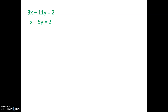So those are two equations, and we want to find the x and y value that will make the first equation true and also make the second equation true. The first step is to get one letter in one equation alone, so I'm going to get the x alone. I'll leave x on the left-hand side and move the 5y over, so x equals 5y plus 2.